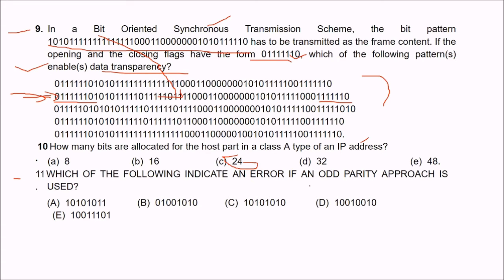Question 11: which of the following indicates an error if an odd parity approach is used? You need to compute the number of 1s. The answer is C — because counting the 1s gives 4 ones, and since odd parity is required, having an even number of 1s indicates an error.